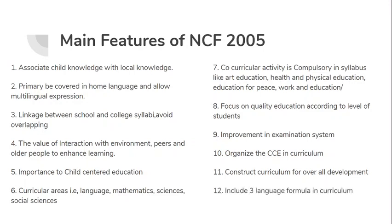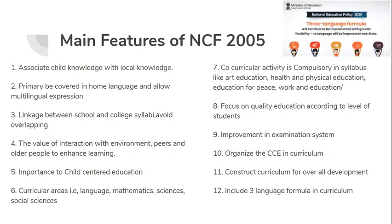After that: include the three-language formula in the curriculum. First, there should be the home language — the mother tongue. Second, any one Indian language — for example, the state language, Hindi, Tamil, or similar. Third, the child can choose any one foreign language. So the three-language formula should be there. NEP 2020 has also emphasized the three-language formula and said that no language should be imposed on children — children should freely accept and choose their language.